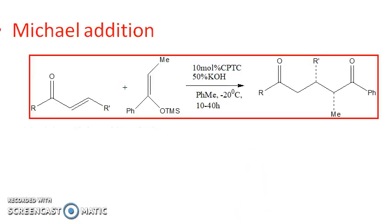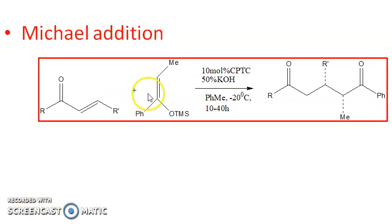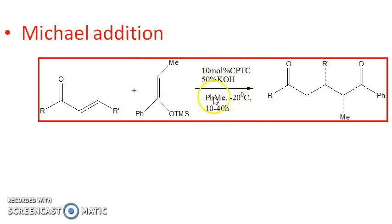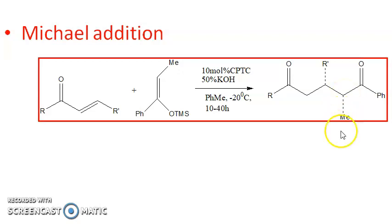Here I have taken up one example of Michael addition. You have the two substrates, and CPTC is the PTC being used along with 3% KOH as the base, and toluene as the solvent. You are not using very costly or toxic solvents. Using very simple solvents, you are carrying out a reaction between these two via Michael addition.